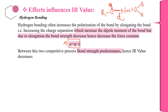The dipole moment of the bond is increased by charge separation and polarization. However, even though the dipole moment is increasing, the force constant is decreased due to bond elongation. Since wavenumber ν̄ has a direct relationship with the force constant, and the bond strength effect predominates in this competitive process, the IR value (wavenumber) ultimately decreases in the case of hydrogen bonding.